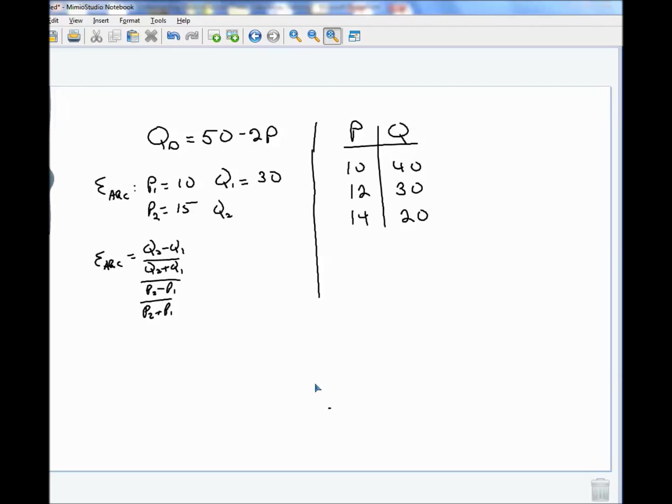And when P is 15, Q is 50 minus 2 times 15. 2 times 15 is 30. 50 minus 30 is 20. All right, so there are our values for P and Q.